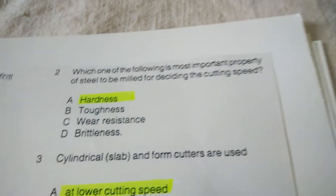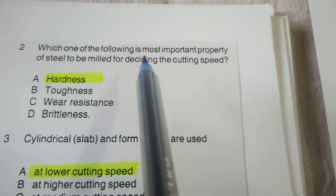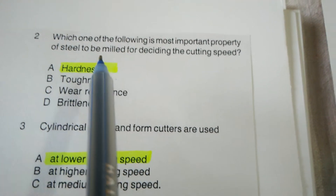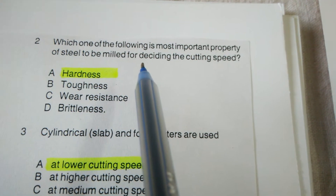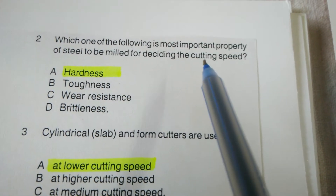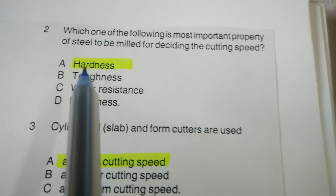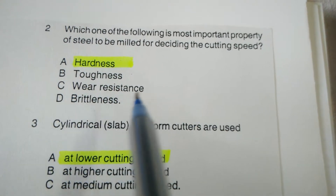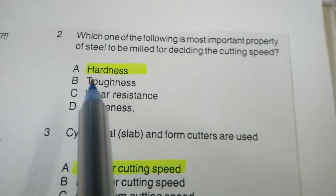Next objective: Which one of the following is the most important property of steel to be milled for deciding the cutting speed? The options are: hardness, toughness, wear resistance, and brittleness. The correct answer is hardness.